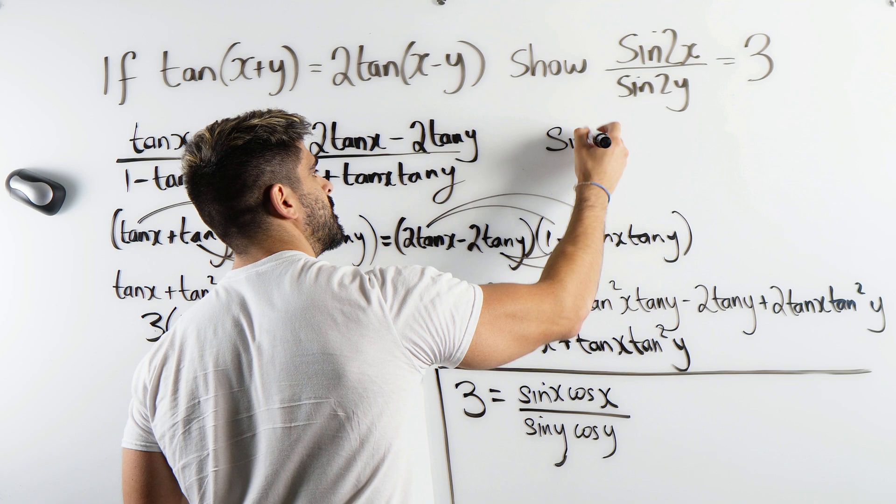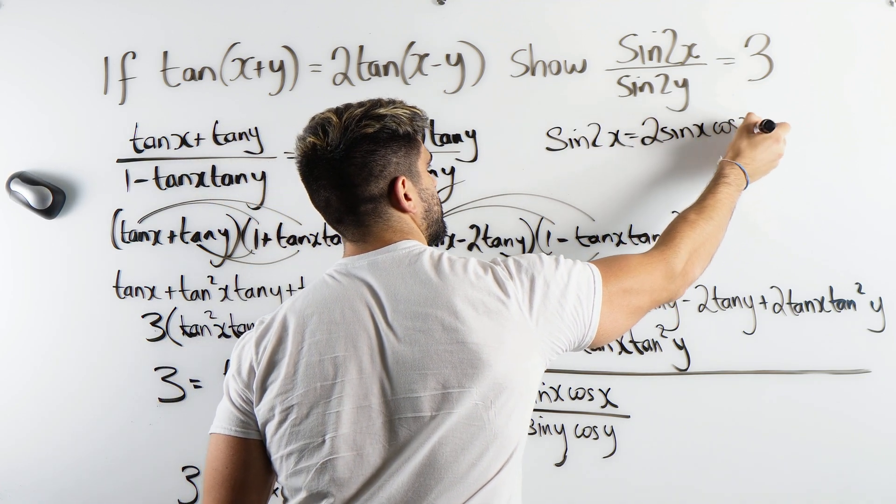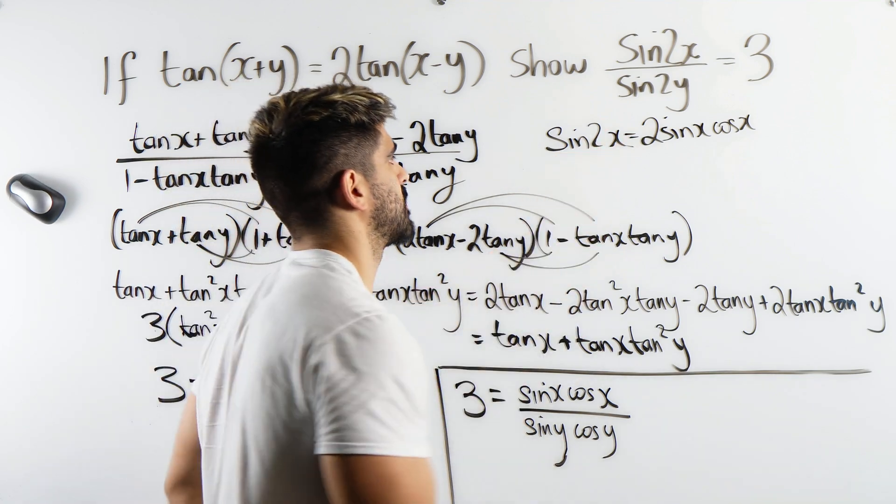Sine of 2x is 2 sine x cos x. But we have sine x cos x. We just need to half both sides.